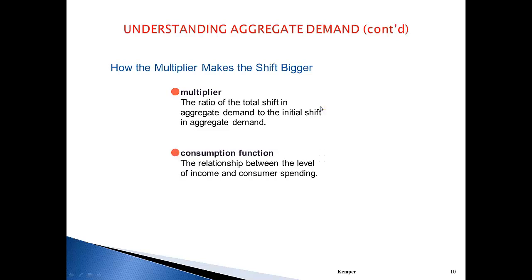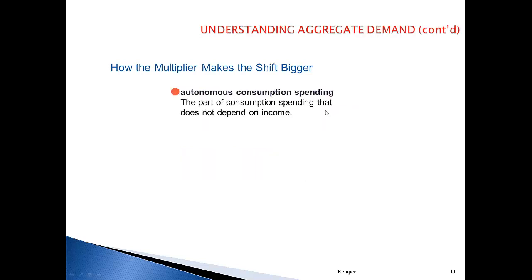The consumption function is the relationship between the level of income and consumer spending. Autonomous consumption spending is the part of consumption that doesn't depend on income — in other words, what you're going to spend no matter what. You might think of these as necessities: gasoline, rent, your mortgage, basic clothing. However, nicer or additional clothing would not be under autonomous consumption spending.